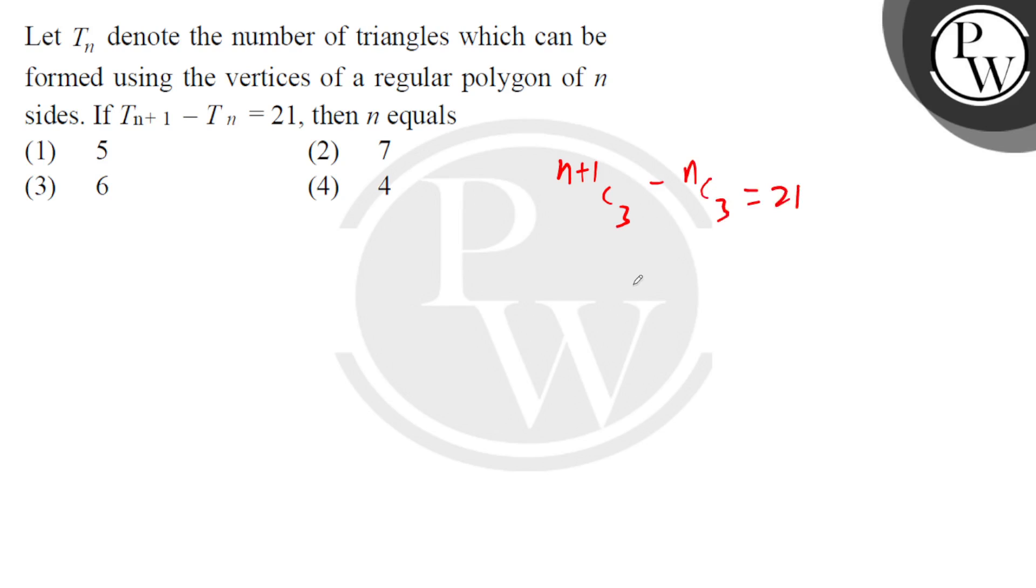(n+1)C3 - nC3 is basically nC2 and that equals 21. Now that is n factorial upon (n-2) factorial times 2 factorial, that equals 21.